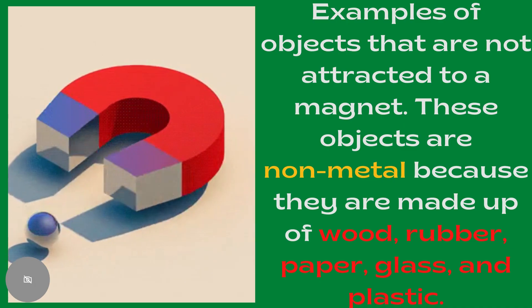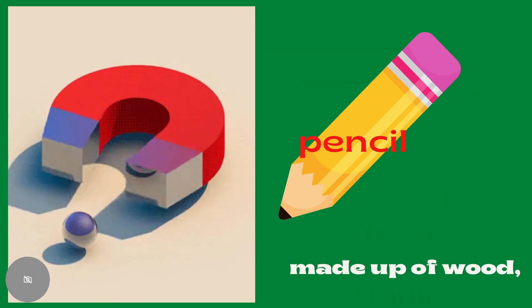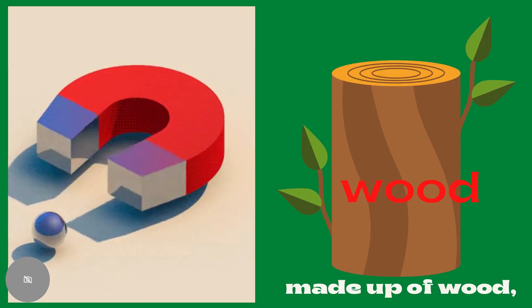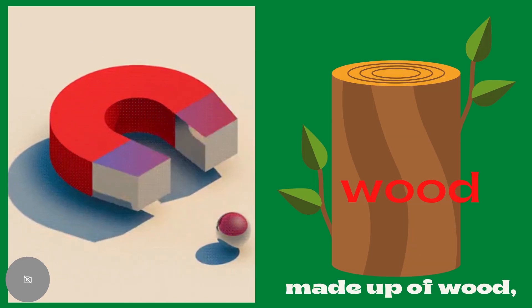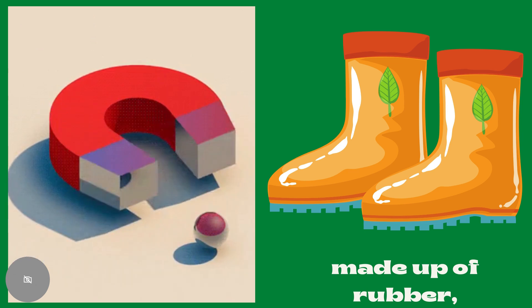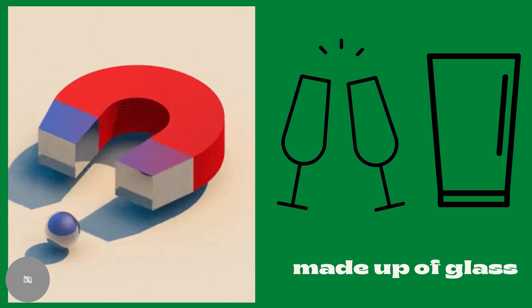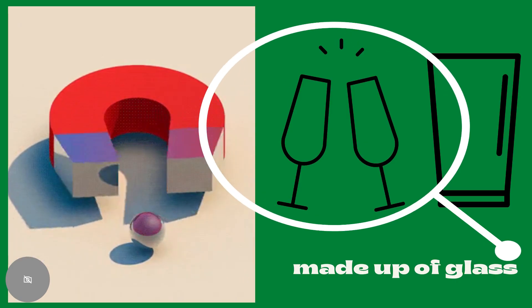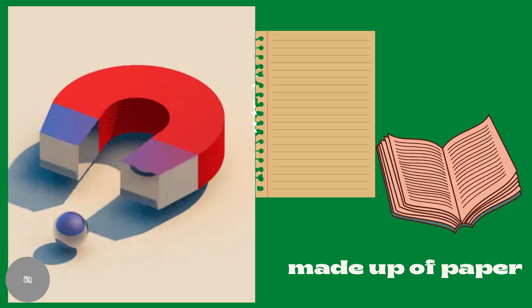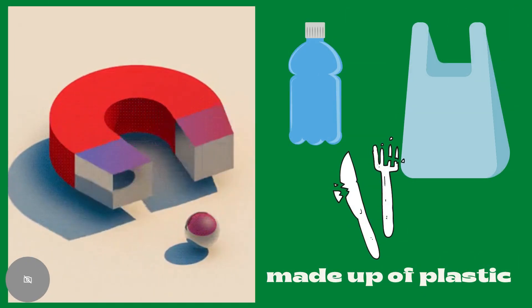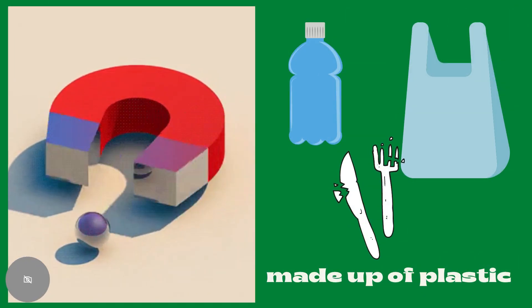Here are also examples of objects that are not attracted to a magnet. These objects are non-metal. They are made up of wood, such as a pencil; made up of rubber; made up of glass; made up of paper; and made up of plastic.